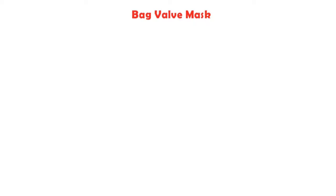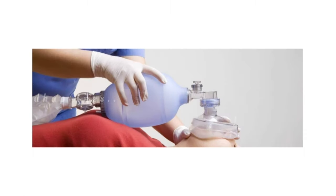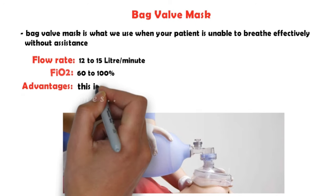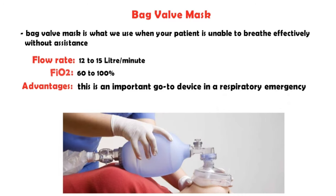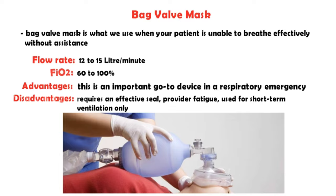Bag valve mask — also called a BVM. This is what we use when a patient is unable to breathe effectively without assistance. It consists of a face mask and reservoir bag that you position over the patient's nose and mouth while forcing air into the lungs by squeezing the bag. Flow rate: 12–15 liters per minute. FiO2: 60–100%. Advantages: an important go-to device in a respiratory emergency — always know where the BVM is kept and how to hook it up. In some units there is one per room; in med-surg units there might be one shared device located nearby. Disadvantages: requires an effective seal, causes provider fatigue, and is used for short-term ventilation only.